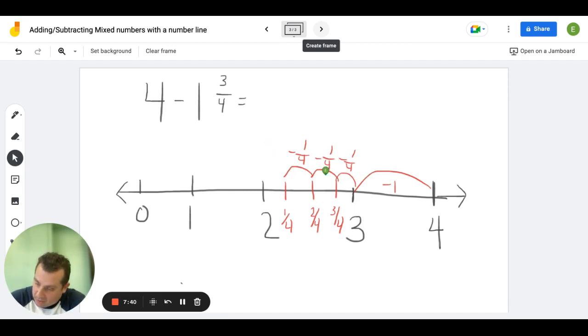And where do we wind up? We are winding up right here. This is 2 and 1/4. It's not just 2, it's 2 and 1/4. So that is our answer: 2 and 1/4. And that's how we show this on the number line.